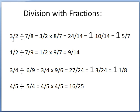Division with fractions: to divide by a fraction, simply flip it over. Three-halves divided by seven-eighths — flip seven-eighths to become eight-sevenths, and now multiply: three-halves times eight-sevenths. Three times eight is 24, two times seven is 14. Fourteen goes into 24 once, leaving ten, so it's one and ten-fourteenths, which reduces to one and five-sevenths.